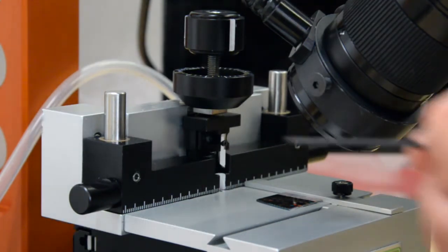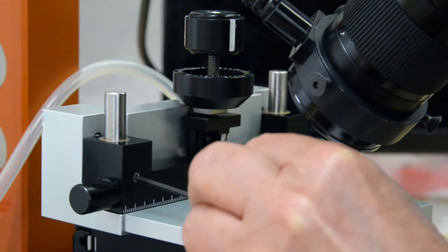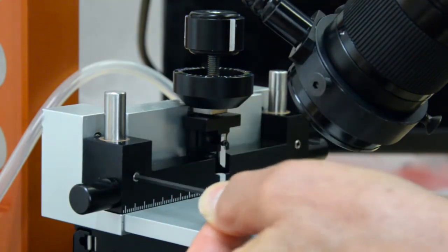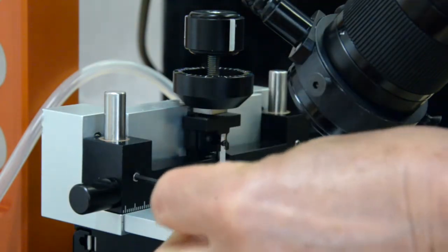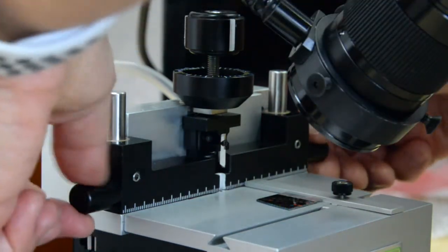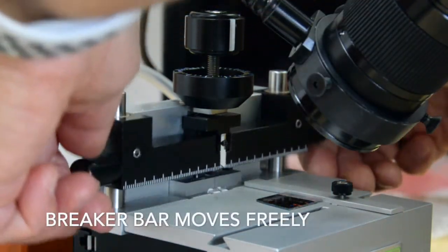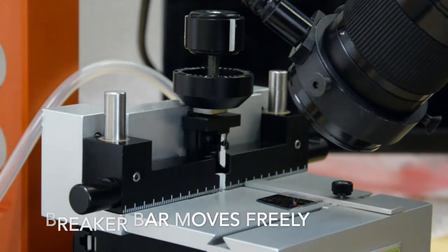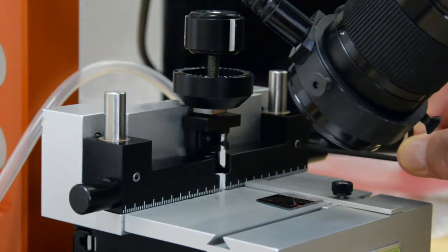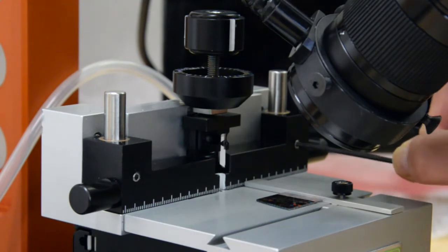Loosen the breaker bar screws so that the breaker bar can move freely. Now tighten the screws by turning them clockwise, stopping when you just feel resistance.